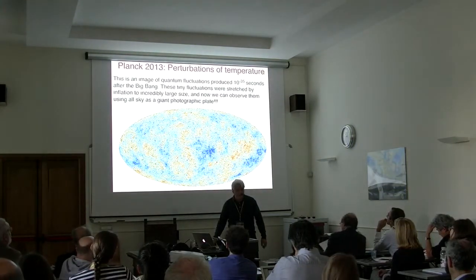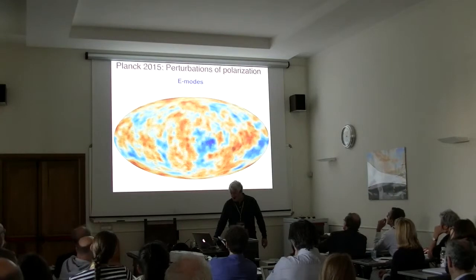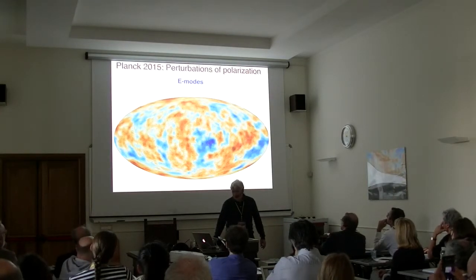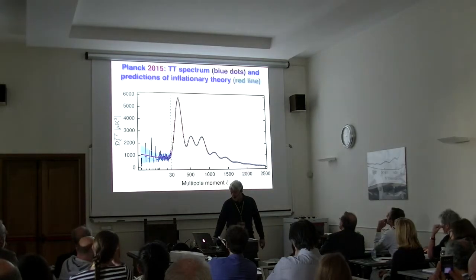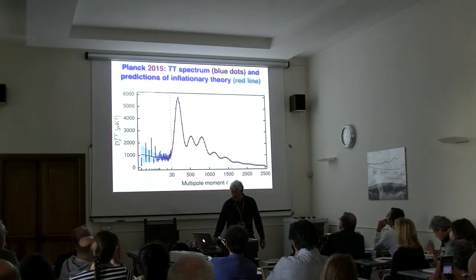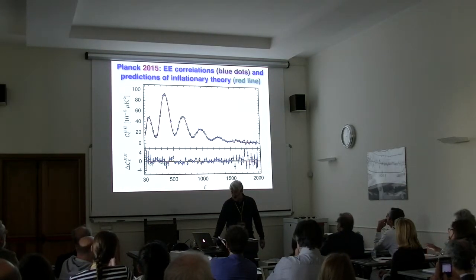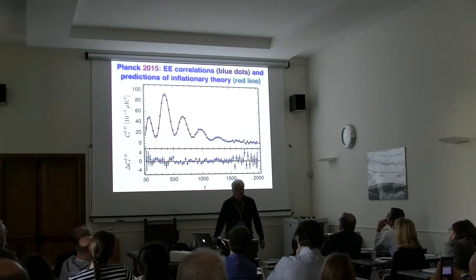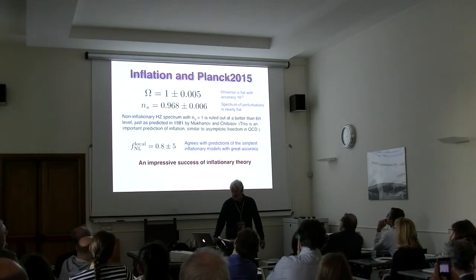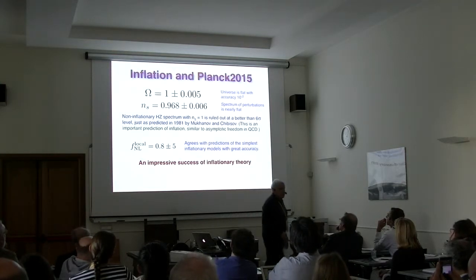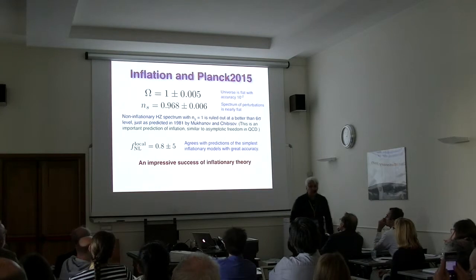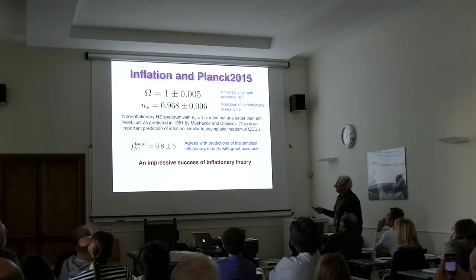These are the famous pictures produced by Planck: the CMB map, the TT power spectrum, and the EE correlation. This is a summary of the most important results for me.